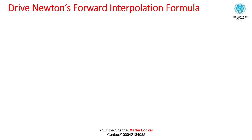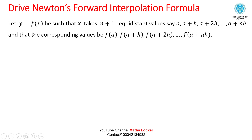To derive Newton's Forward Interpolation Formula: let y = f(x) such that x takes n+1 equidistant values: a, a+h, a+2h, up to a+nh, with corresponding values f(a), f(a+h), f(a+2h), up to f(a+nh).